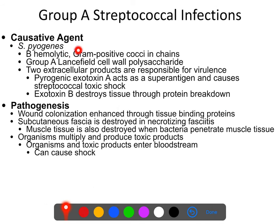The causative agent is typically strep pyogenes — beta hemolytic, gram-positive cocci growing in chains. There are a bunch of different virulence factors, but two important ones are exotoxin A, which is the super antigen causing streptococcal toxic shock, and exotoxin B, which causes necrosis of tissue by breaking down proteins in tissue — proteins being what your tissue is made of — so your tissue essentially liquefies and falls apart.